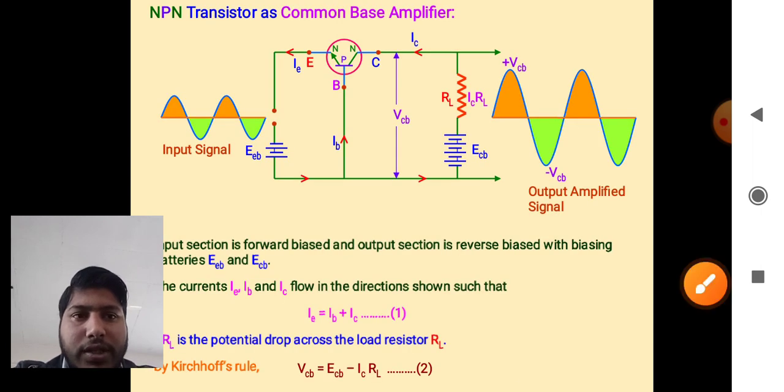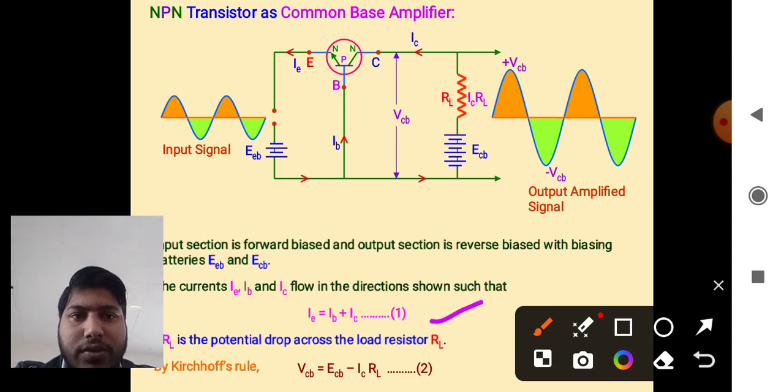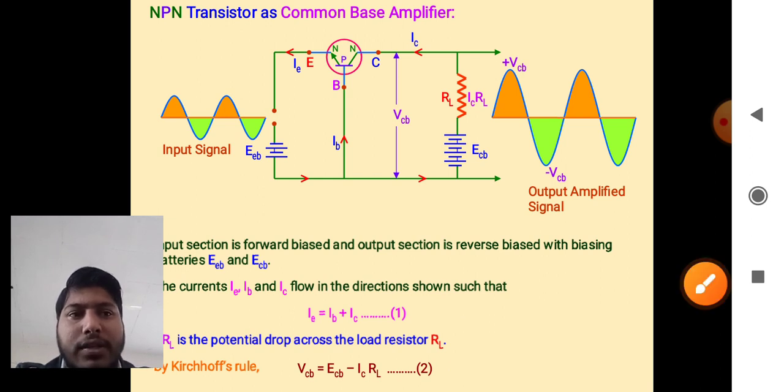In our last lecture we found two relationships. First one is ie equals ib plus ic, and second one is vcb equals ecb minus ic times rl. Now we will use these two relationships here.